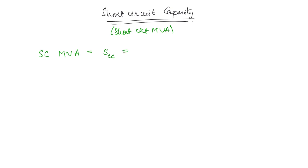SCC is equal to root 3 into VL, which is the line voltage, into the three-phase short circuit current ISC, multiplied by 10 to the power minus 3, giving units of MVA.